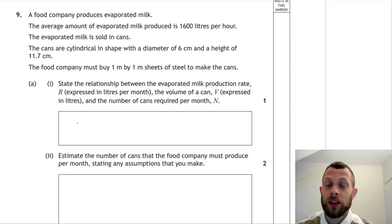So what's an equation to link those together? Well, we could say that R is equal to V times N. Total amount of milk is equal to the volume of milk in one can multiplied by the number of cans. So that would get you that mark.